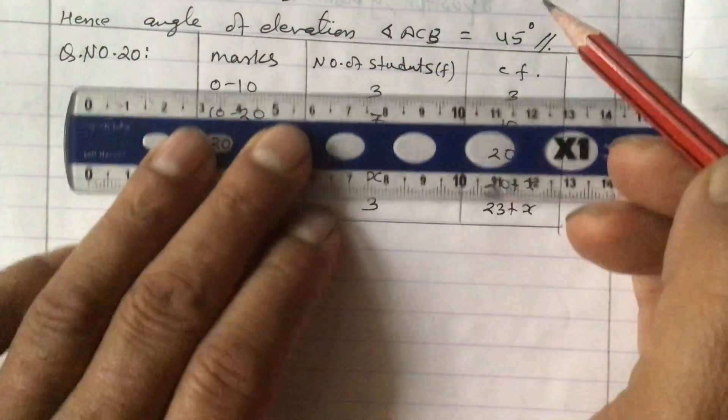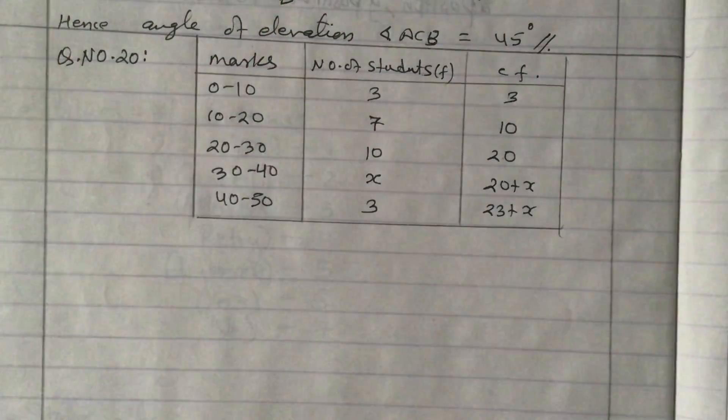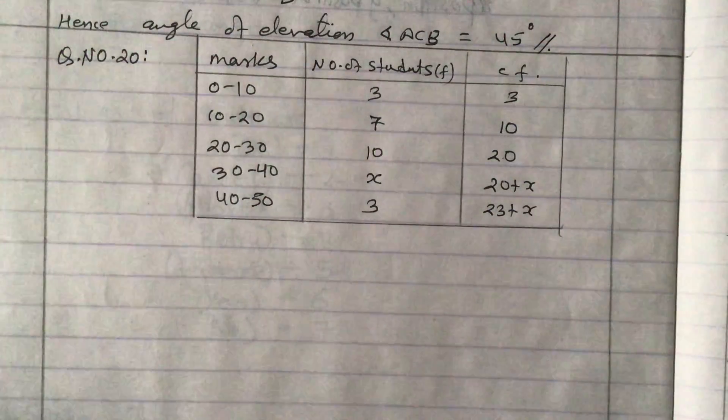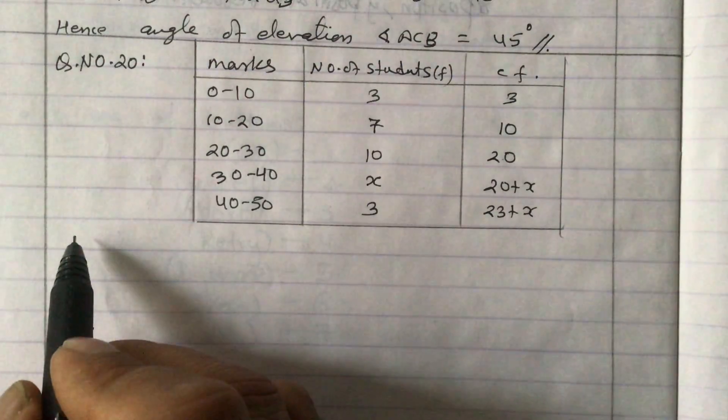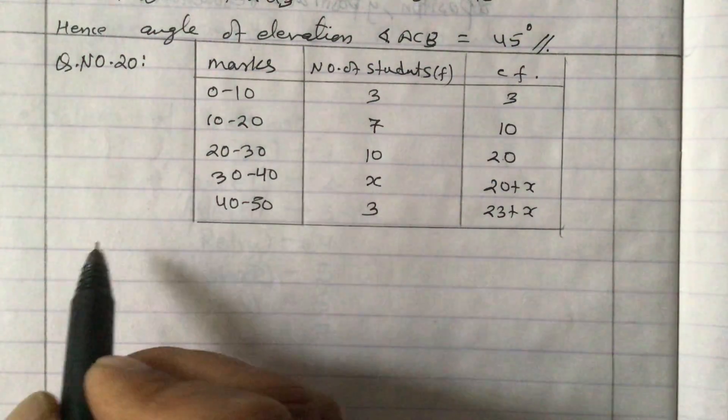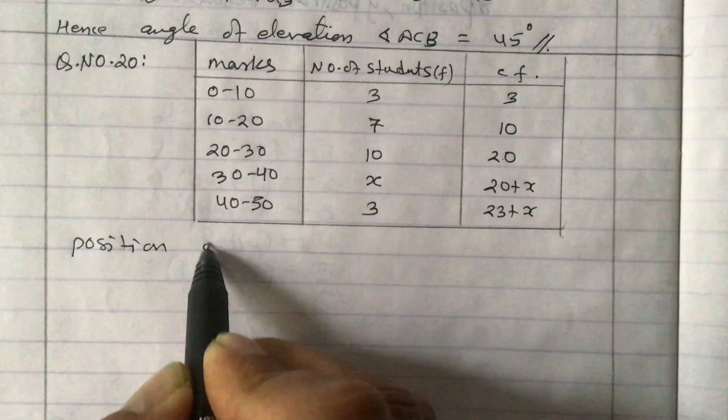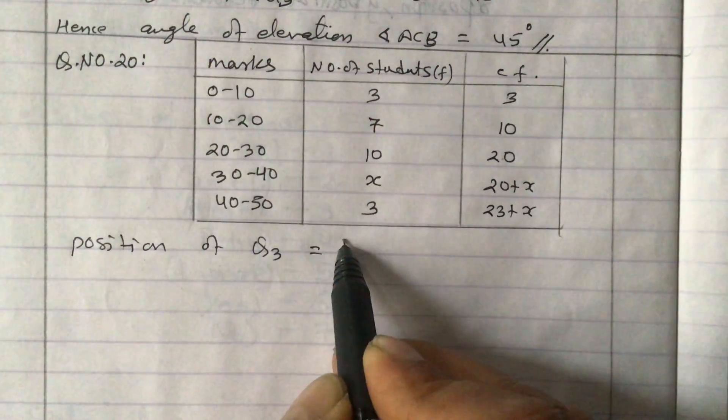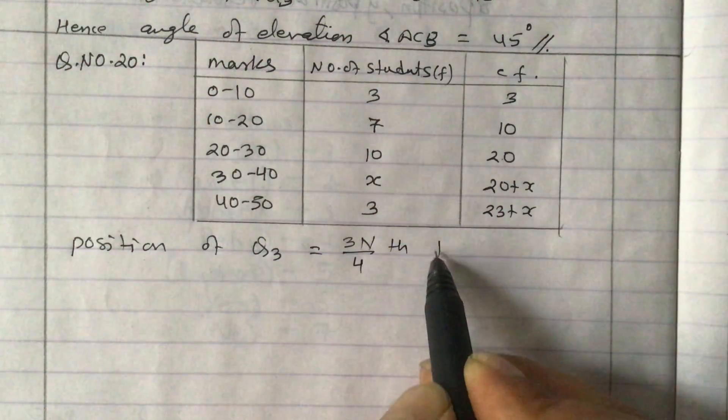Now let us complete this table first. Always in examination also, while solving the problem, you have to complete the table like this. Now after this, what we can find is the position of third quartile Q3. Position of Q3 is equal to 3N by 4th term.